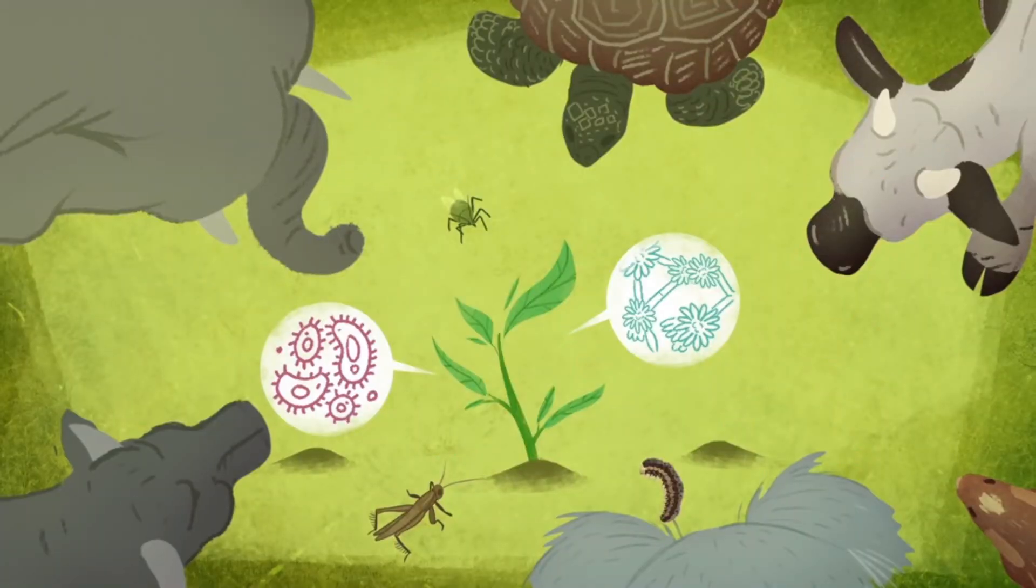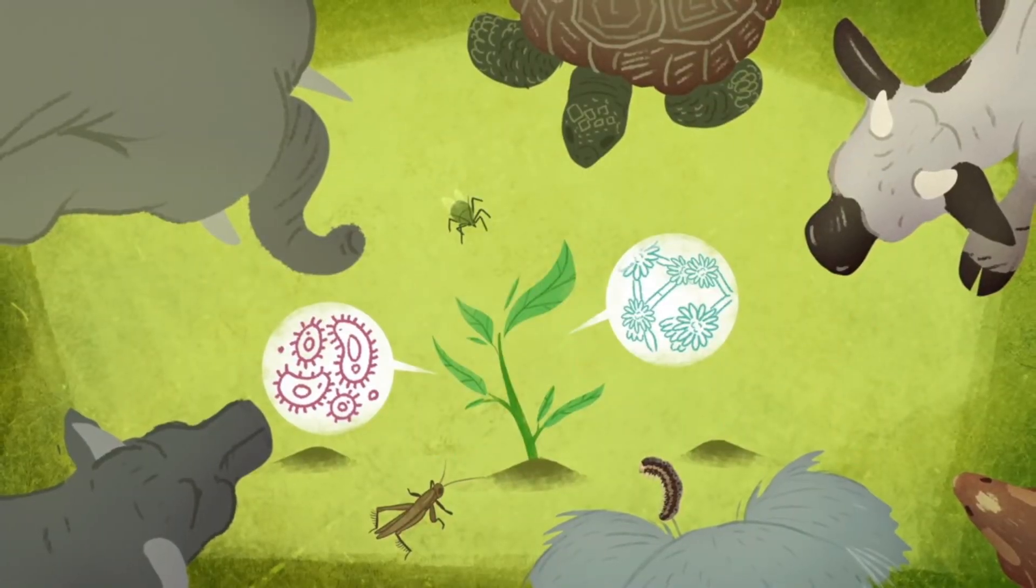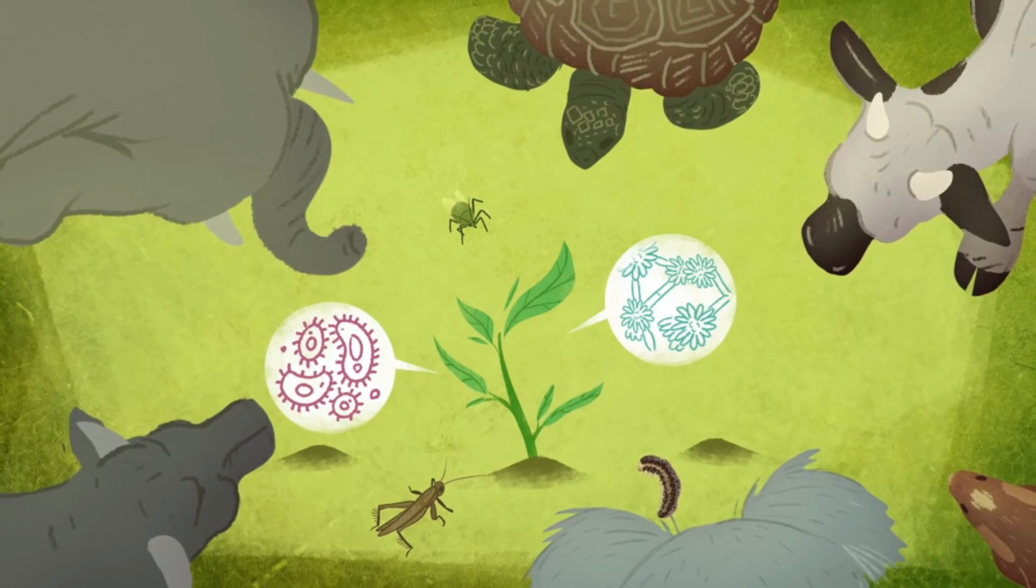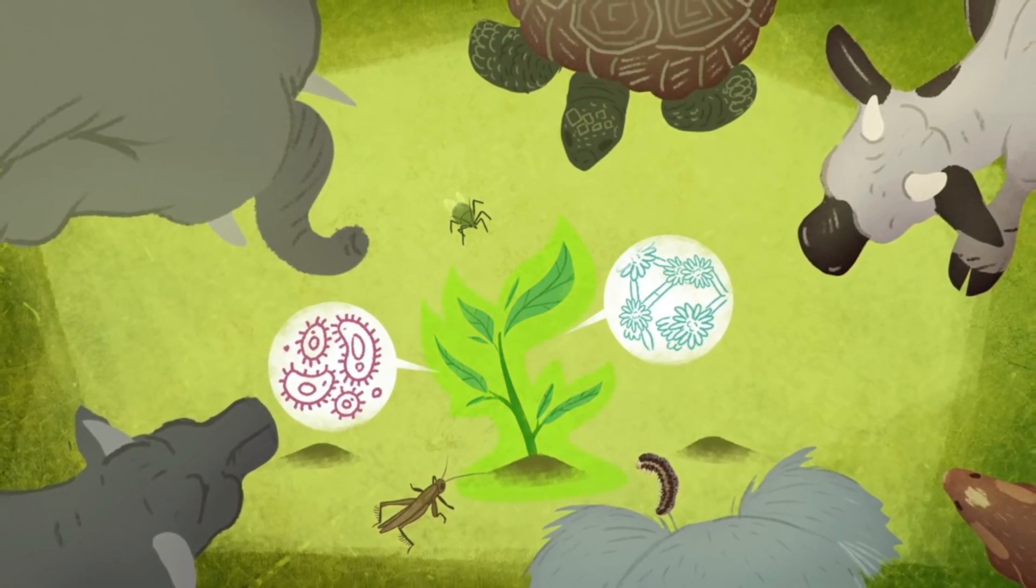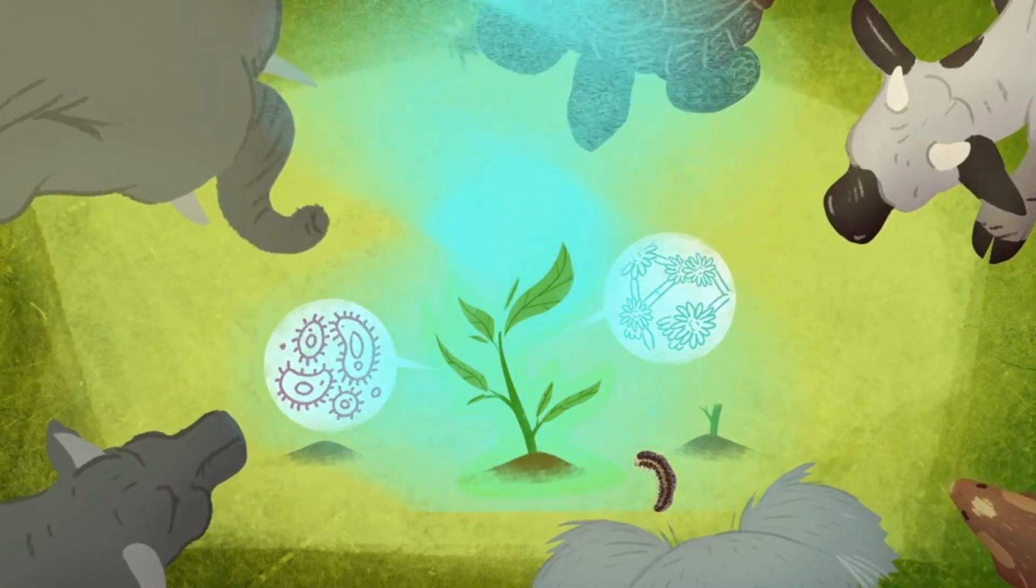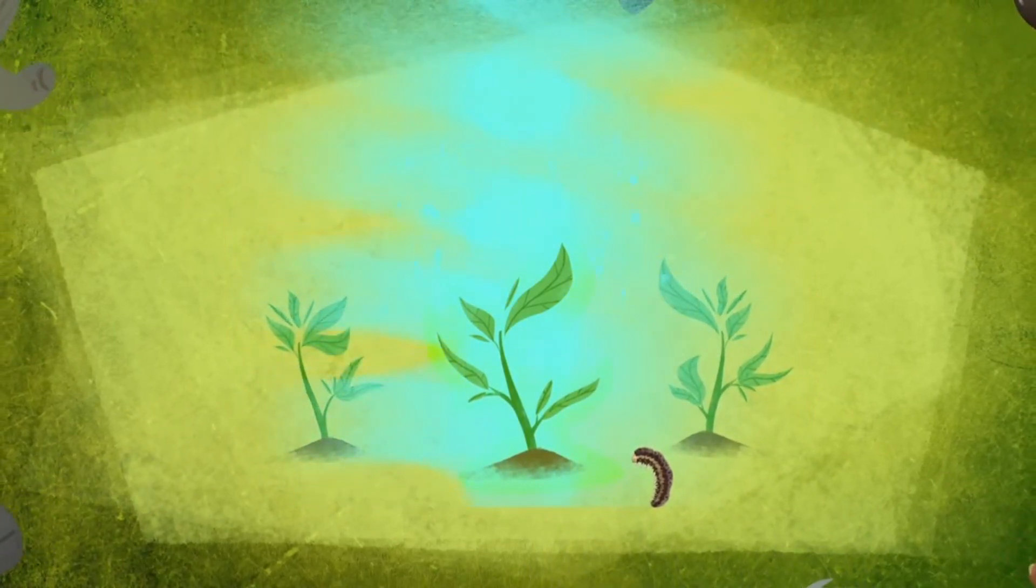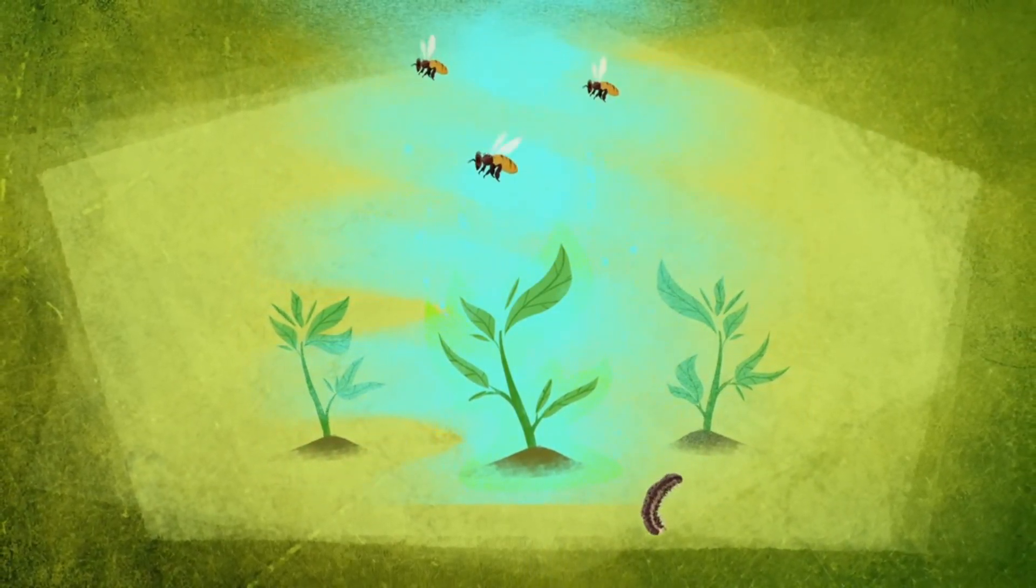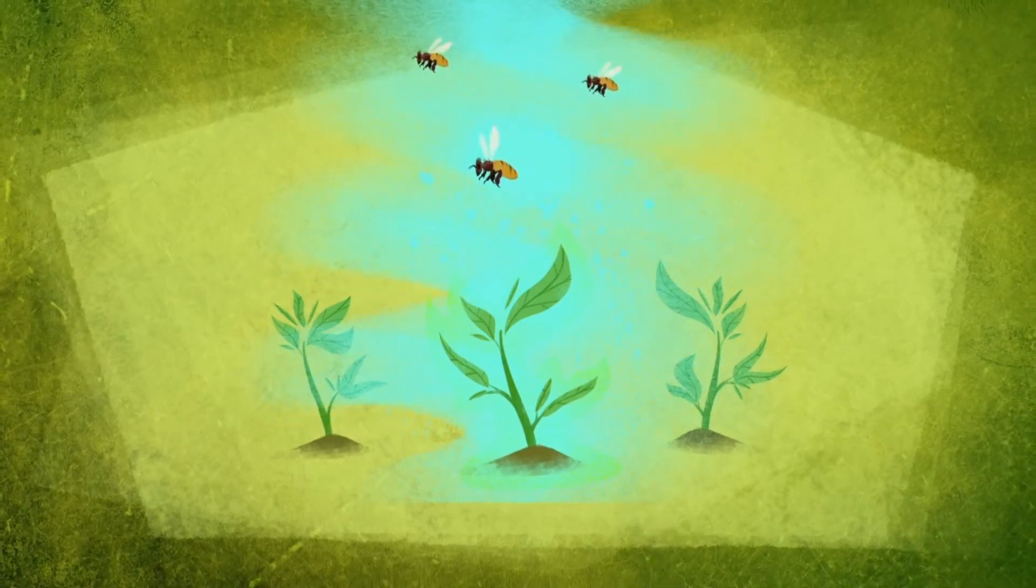Plants may not be able to flee the scene of an attack or fight off predators with teeth and claws, but with sturdy armor, a well-stocked chemical arsenal, a neighborhood watch, and cross-species alliances, a plant isn't always an easy meal.